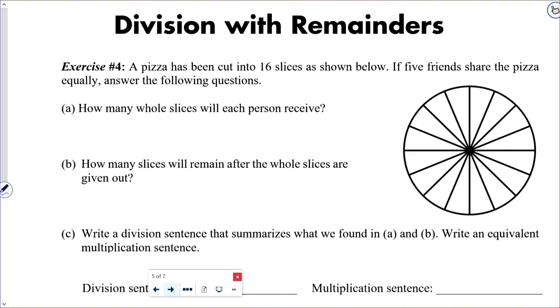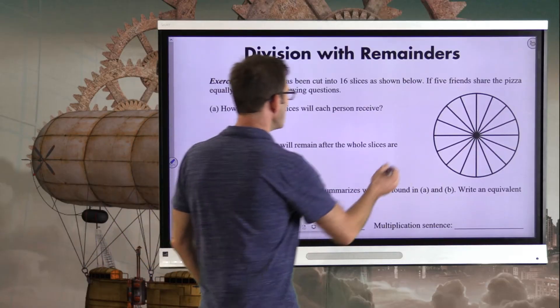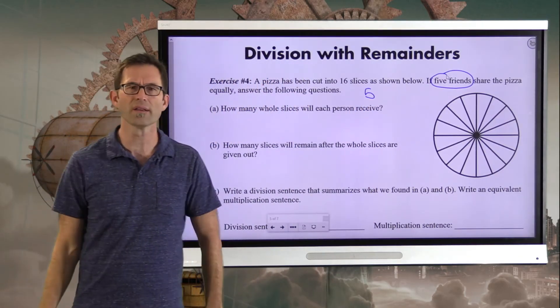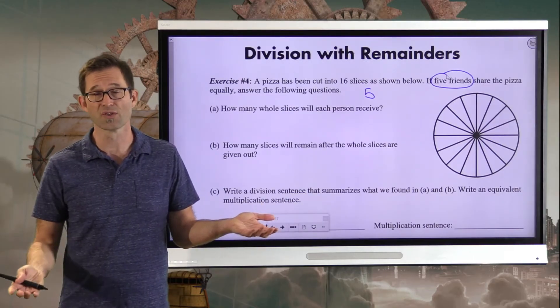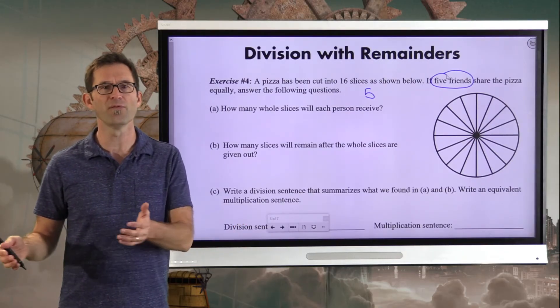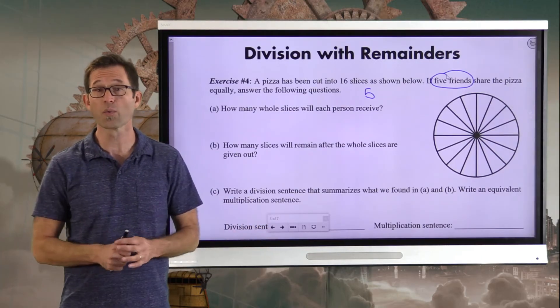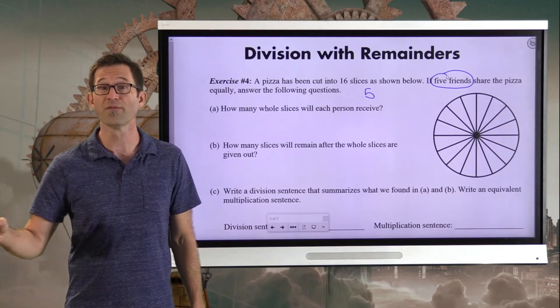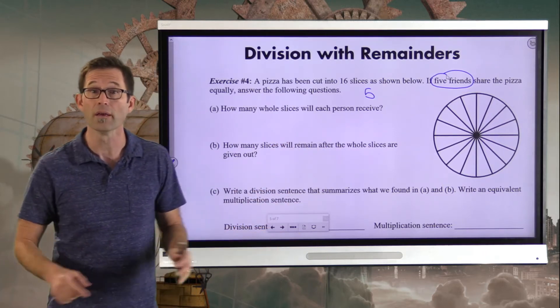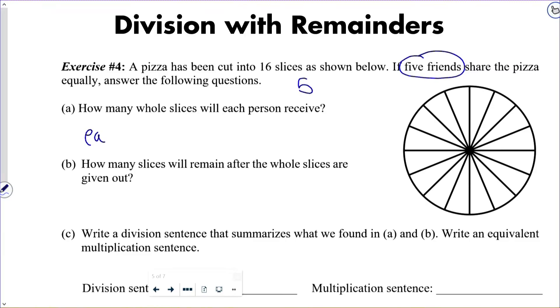A. How many whole slices will each person receive? All right. Well, let's just kind of think about this for a minute. We've got these five people, and they're trying to share 16 slices. Well, let's see. They certainly would be able to get at least one slice each, because that's just five. If they got two slices each, that would be 10. And if they got three slices each, that would be 15. Now, they can't get four slices each, because that would be 20. And of course, what I'm doing right now is I'm going through multiples of five. And the closest multiple of five that is still less than the 16 slices I've got here is equal to 15. So each is going to get, each will get three.